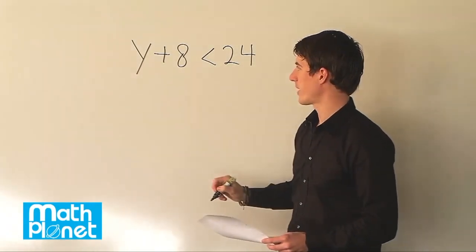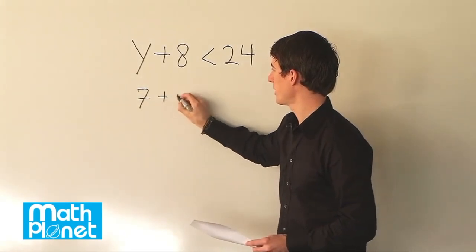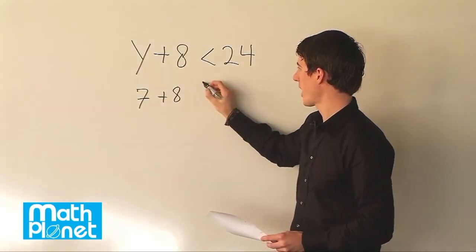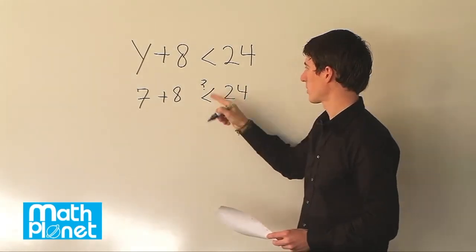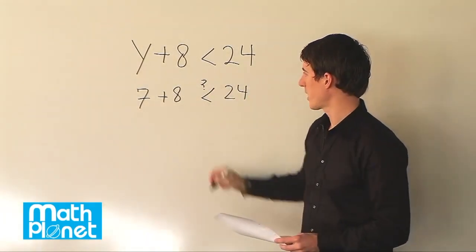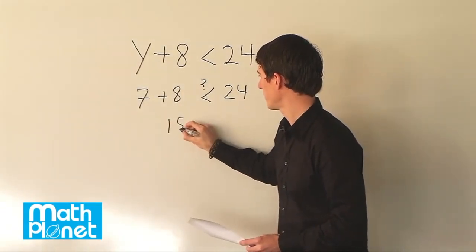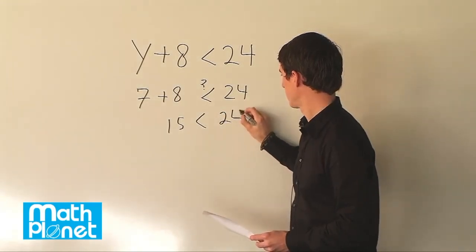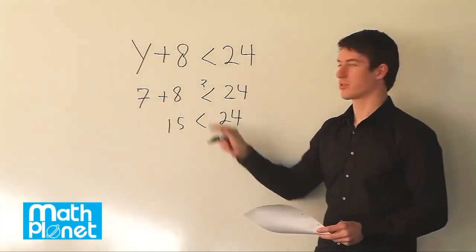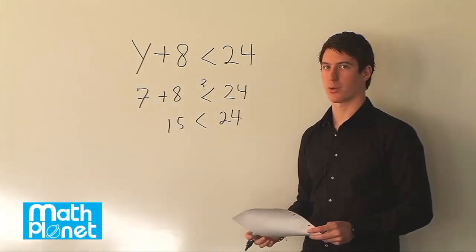If we just go ahead and evaluate immediately and we plug in 7 here, we have 7 plus 8. So now we want to know, is that less than 24? So we say question mark. 7 plus 8 is, of course, 7 plus 8 is 15. So we say, yes, 15 is less than 24. So this is true. If y is 7, then this inequality is true and it works out.